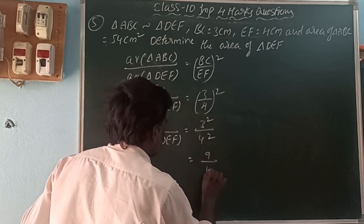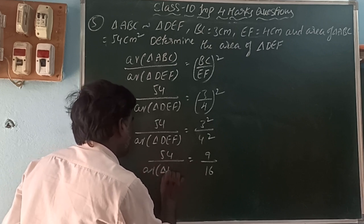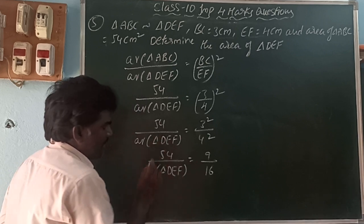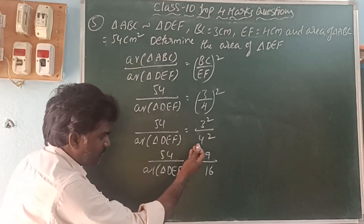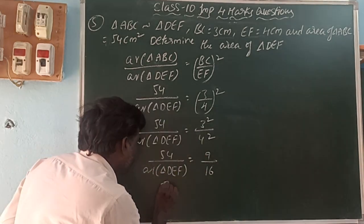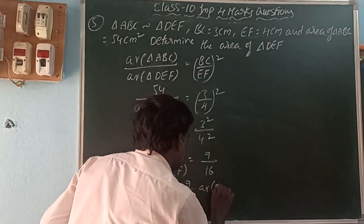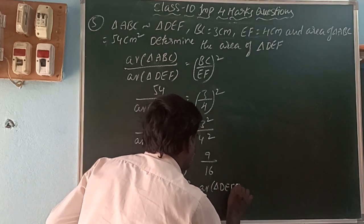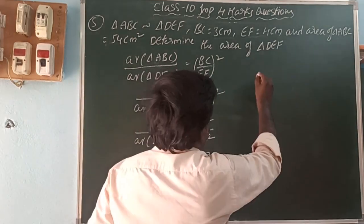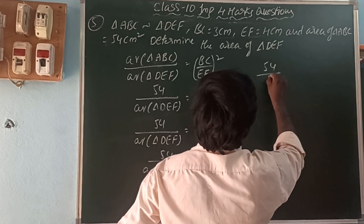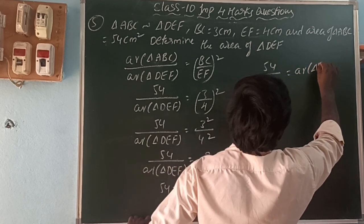So 3 squared is 9 and 4 squared is 16. We have 54 divided by area of triangle DEF = 9/16. Moving area of DEF to the left side, we get 54 = (9/16) × area of DEF. Bringing 9/16 to the left as its reciprocal: area of DEF = 54 × (16/9).